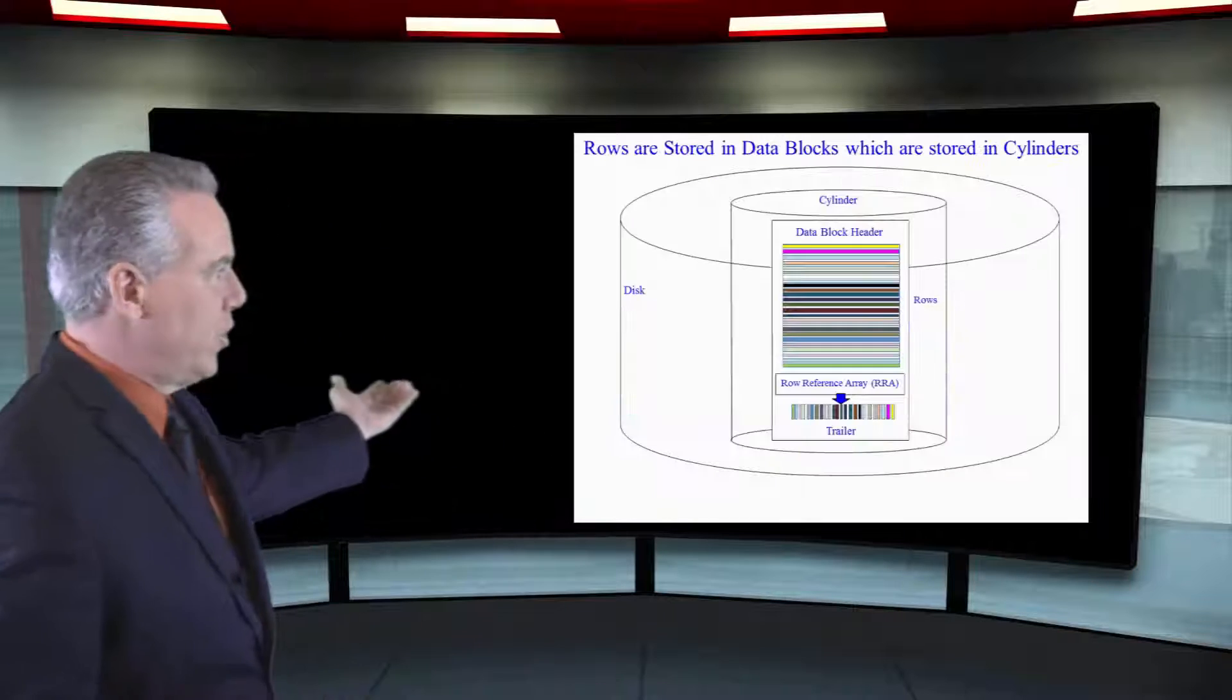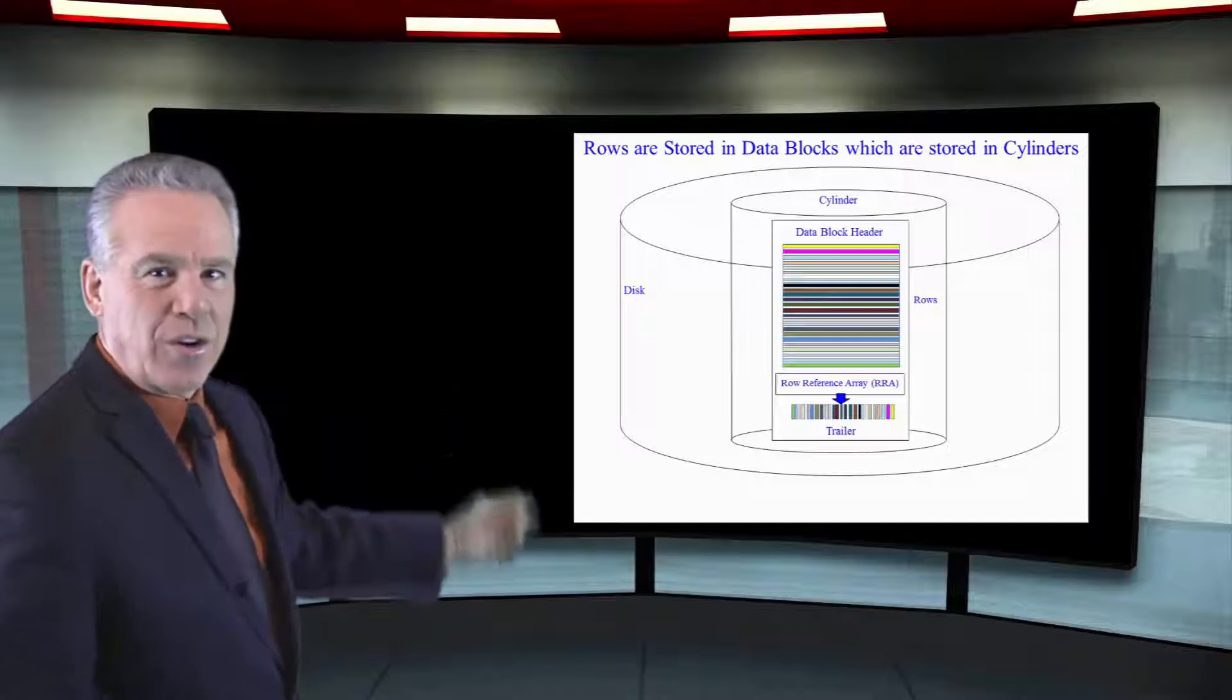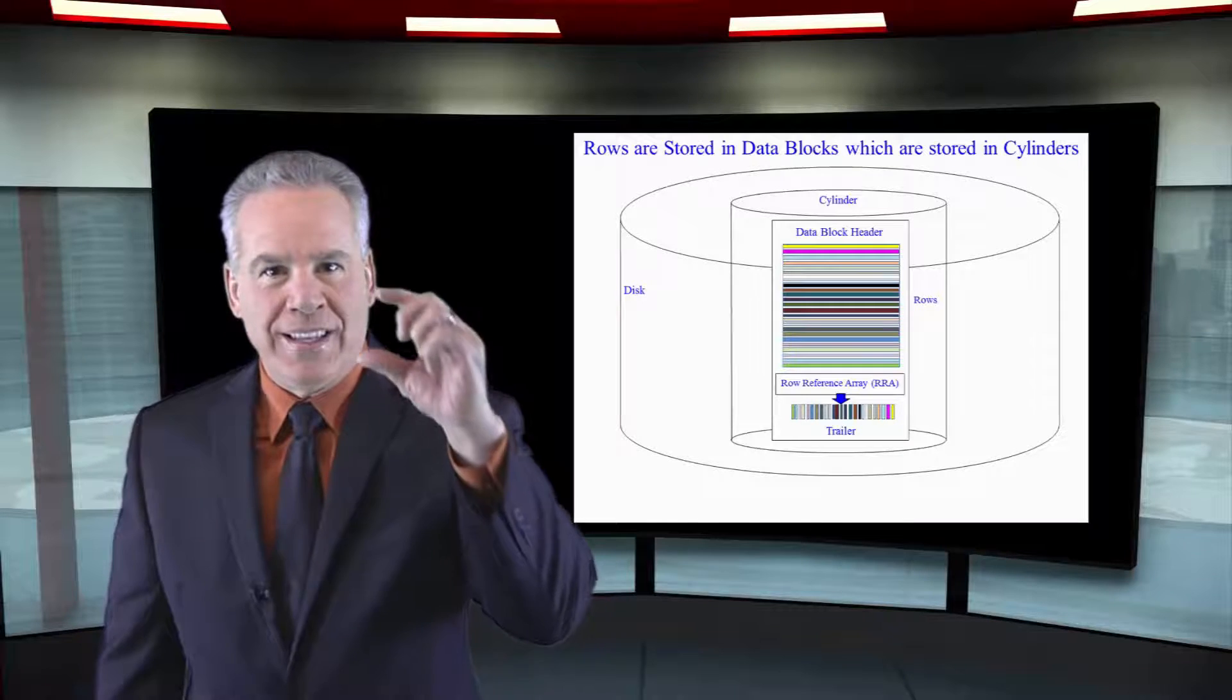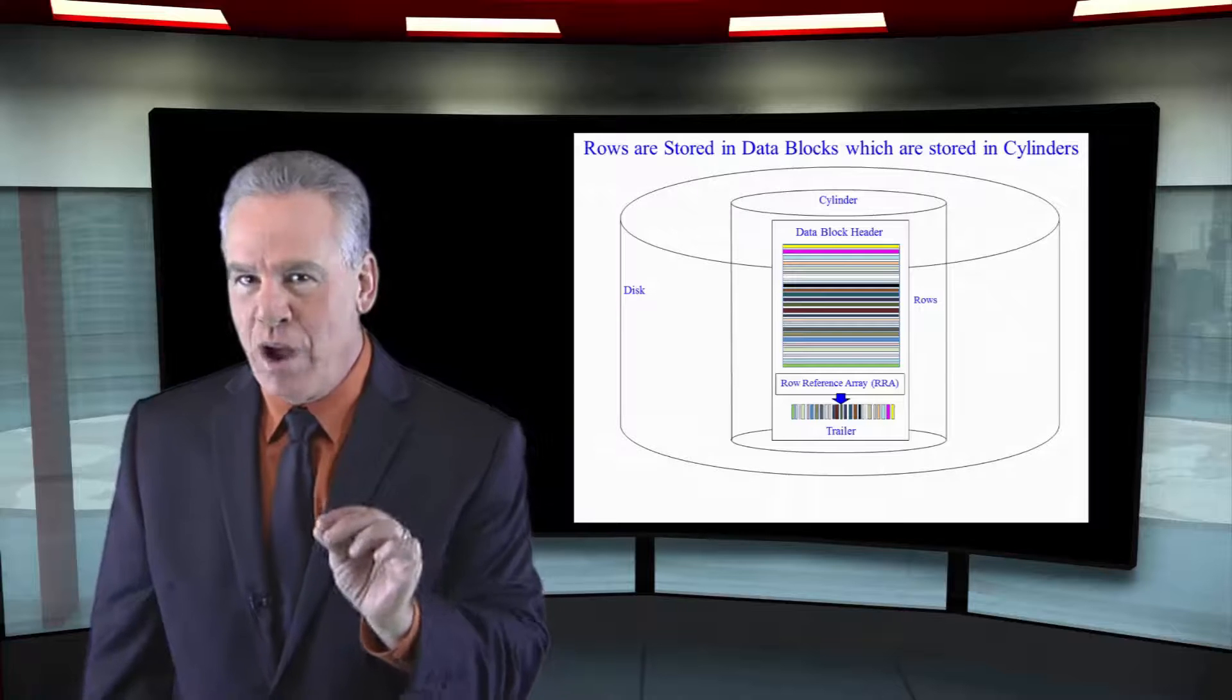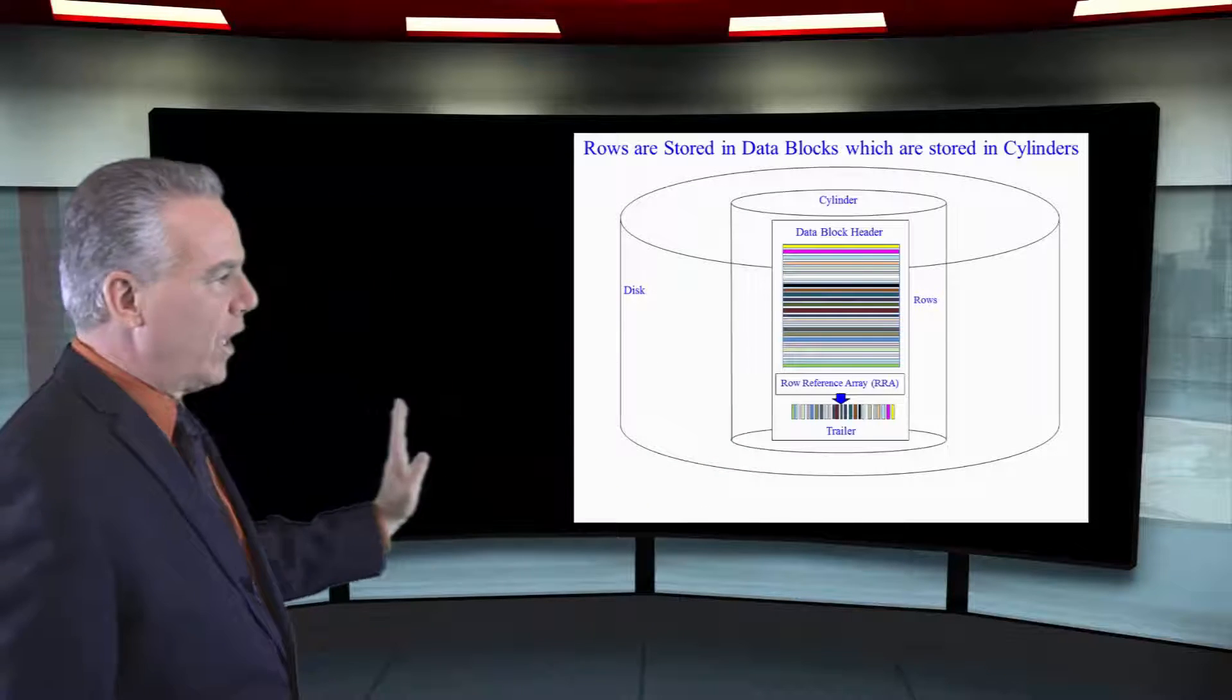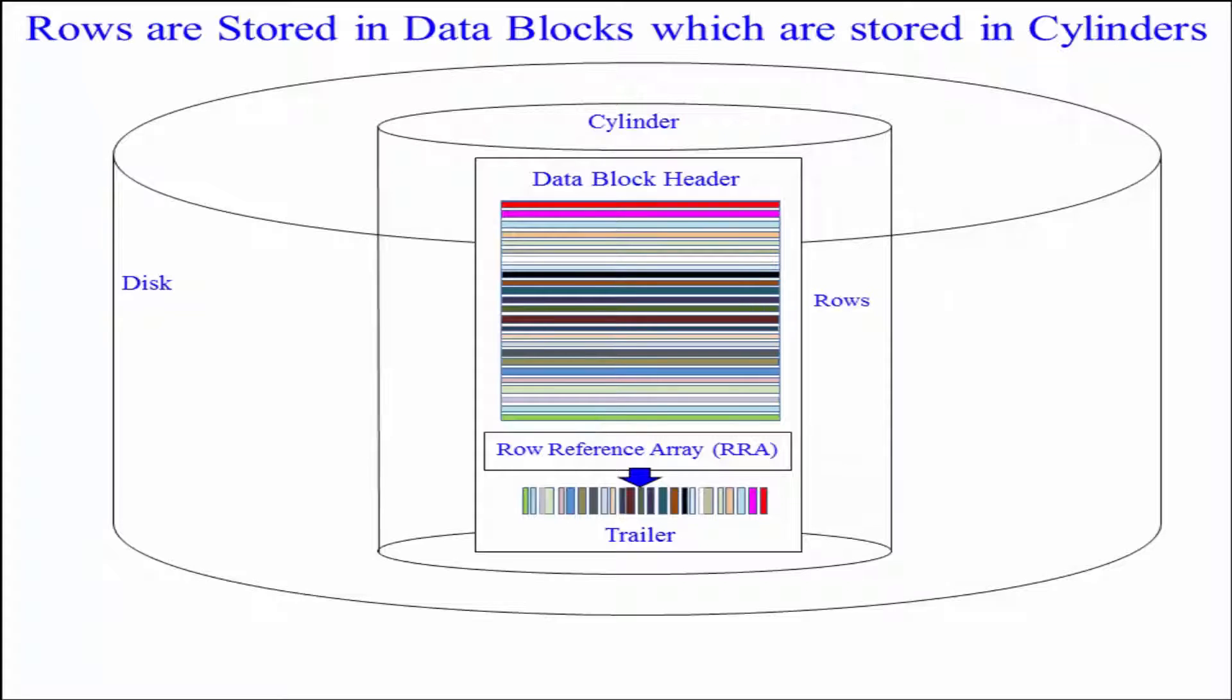Take a look at this picture. This is a disk and inside that disk is a cylinder. Inside that cylinder will be the data blocks. As you can see here, we can see a bunch of different colored rows. I've colored the rows in the block for you. But also notice, at the bottom is the row reference array. It's going to have the starting position of every row. Notice I've color coded that for you. The last thing in the row reference array points to the first row in the block. Once that's in memory, that's how they find things.